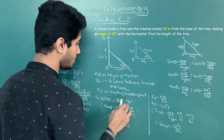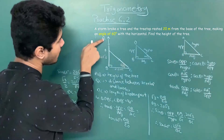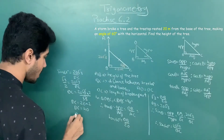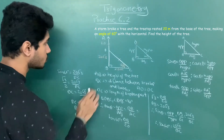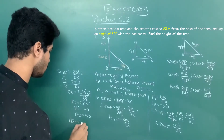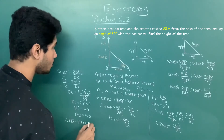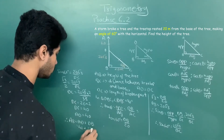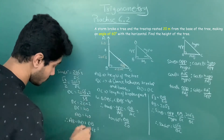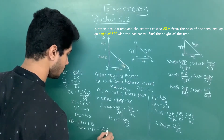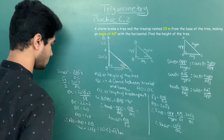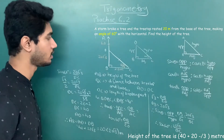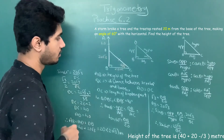Since the length of AD equals DC (the broken part), AD equals 40 meters. To find the total height AB: AB equals AD plus DB, which equals 40 plus 20 root 3. Taking 20 as common, we get AB equals 20 bracket 2 plus root 3 meters. The height of the tree is 20(2 + √3), or equivalently 40 + 20√3 meters.